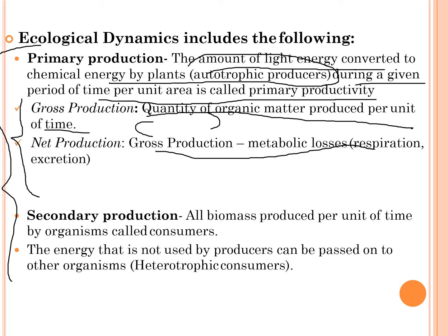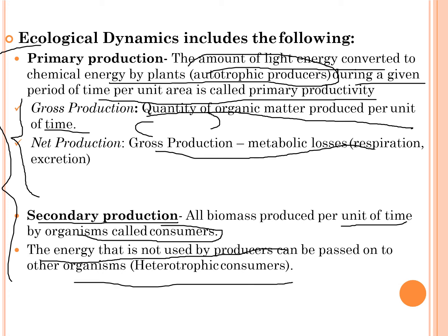For secondary production, all biomass produced per unit of time by organisms that are consumers is called secondary production. The energy that is not used by producers can be passed on to other organisms — the heterotrophic consumers. We'll look at the pyramidal curve to see how energy gets transferred.